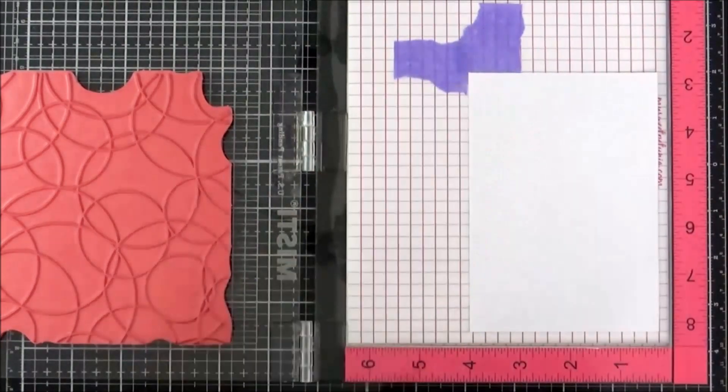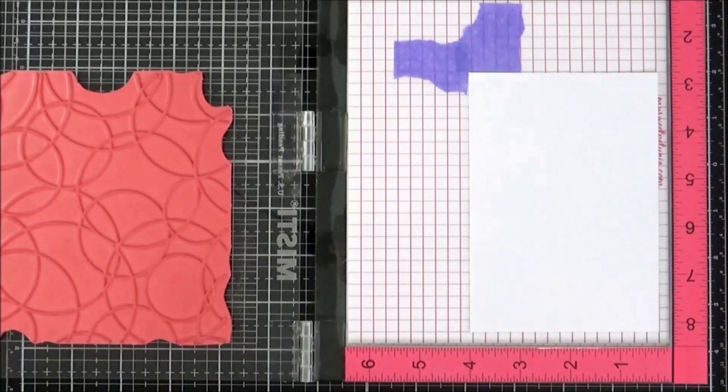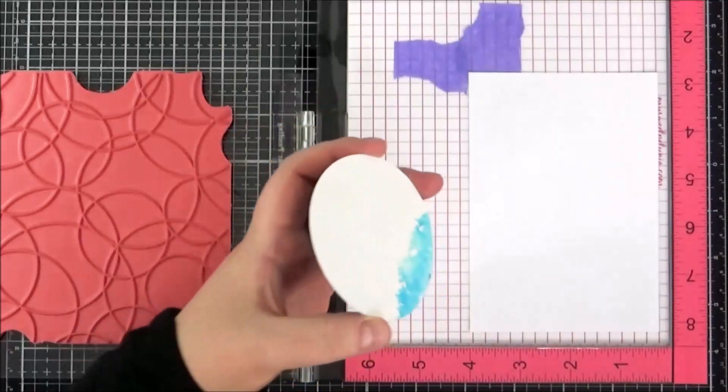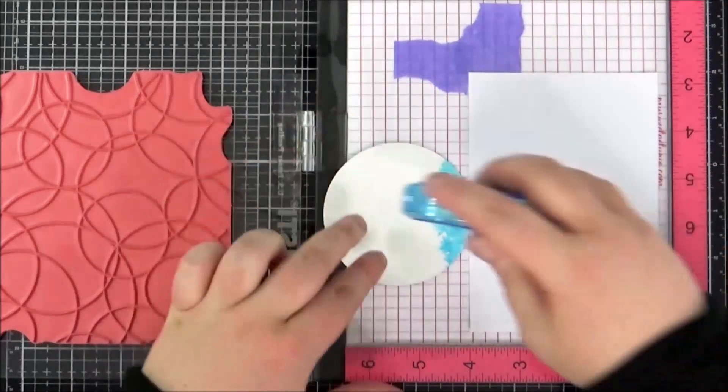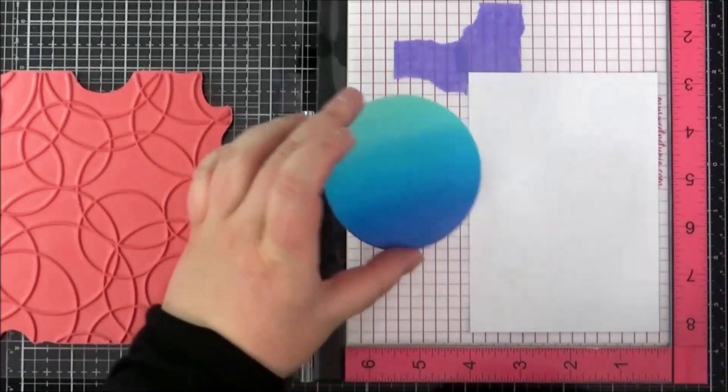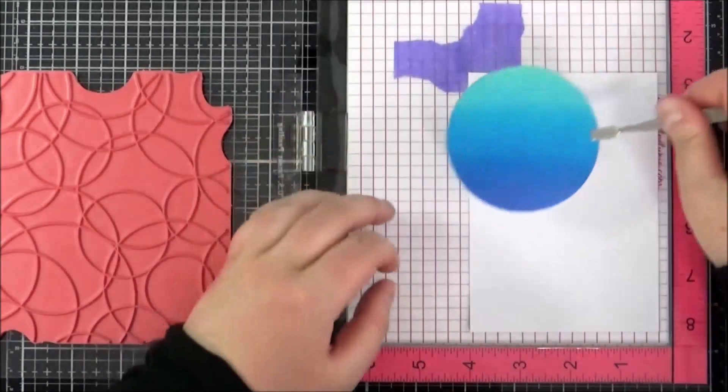I've taken my alcohol ink cardstock piece and cut it into a circle using one of the Hero Arts Nesting Infinity Dies in the circle shape. I'm sticking that down where I want it to end up on my card. I find that it works well to use printer paper so I can visually see where it's going to stamp.